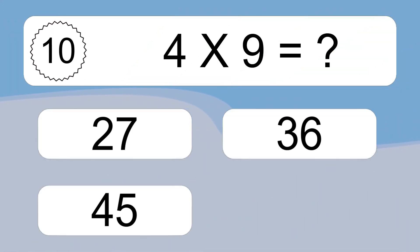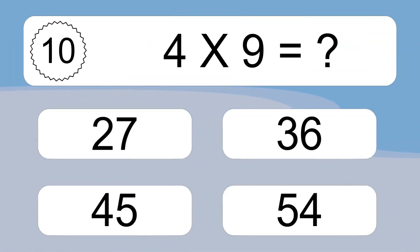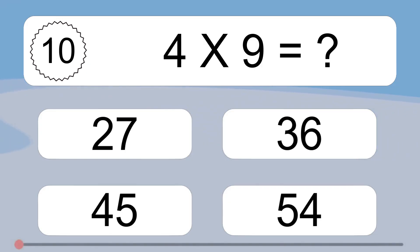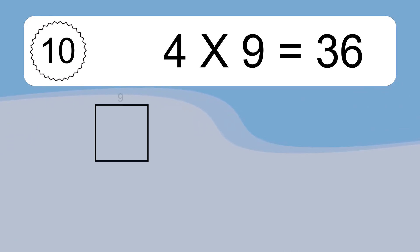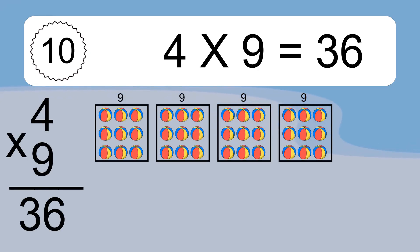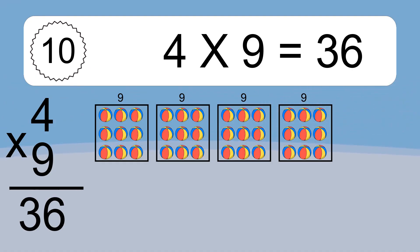4 times 9 equals what? 4 times 9 equals 36. We have 4 boxes, and each box has 9 colorful balls inside. If you count all the balls in all the boxes together, you will have 4 times 9 balls. This equals 36 balls.